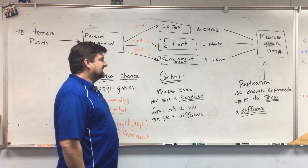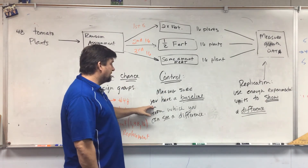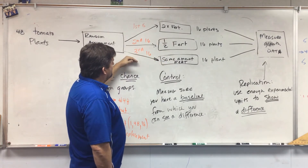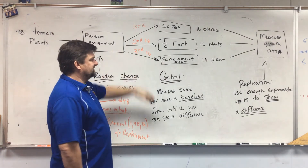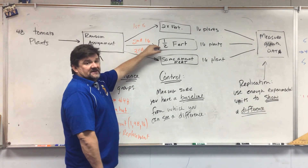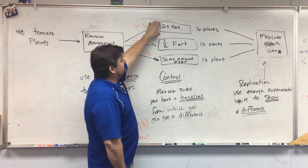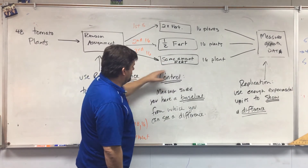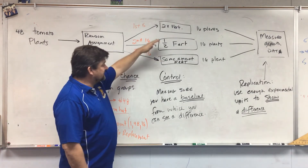The control group doesn't always get nothing — we're establishing a baseline. In our tomato plant example, the baseline is the group that gets the same amount of fertilizer they got last year. The group getting half the fertilizer is compared to that baseline, and the group getting two times the fertilizer is also compared to that same control baseline. Control is all about establishing a baseline so you can see if there's a difference.